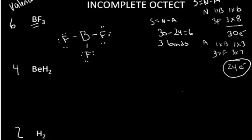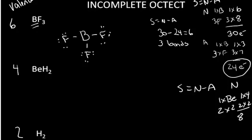The same thing is for beryllium. When you do the S equals N minus A rule, beryllium only needs four electrons. That's one times four for the needed. Hydrogen only needs two electrons, so that's two times two is four. Total needed is eight electrons.